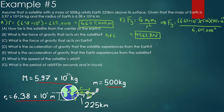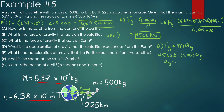Part d asks for the acceleration of gravity the satellite experiences. We know force of gravity equals mass times acceleration of gravity. The satellite experiences 4563.8 newtons, and its mass is 500 kilograms. So acceleration equals 4563.8 divided by 500, which gives us around 9.13 meters per second squared.